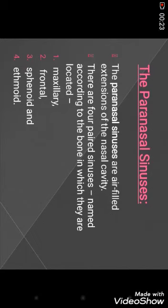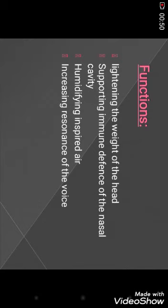Sinuses are cavities or hollow spaces between the skull and facial bones. Paranasal sinuses are air-filled extensions of the nasal cavities. There are four paranasal sinuses, named according to the bone in which they are located: maxillary sinus (in the maxillary bone), frontal sinus (in the frontal bone), sphenoid, and ethmoid. Their functions include lightening the weight of the head, supporting immune defense of the nasal cavity through mucus, humidifying inspired air, and increasing resonance of the voice.